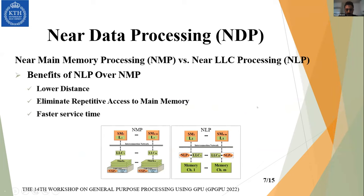We find three aspects that motivate NLP over NMP. First, lower distance: the distance from the main processing core to the LLC is lower than to main memory, so offloaded instructions travel less distance. Second, performing near LLC processing eliminates repetitive access to main memory by reusing data already in the LLC. Third, the LLC provides faster service time compared to main memory in mass processing systems.